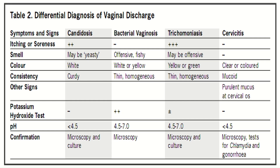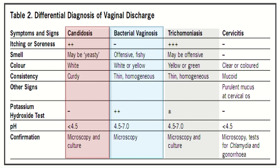This chart shows the differential diagnosis of vaginal discharge. In candidiasis: itching is present, smell may be yeasty, color is white, consistency is curdy, pH may be less than 4.5, and confirmation is by microscopy and culture. In bacterial vaginosis: smell is offensive or fishy, color is white or yellow, consistency is thin or homogeneous, potassium hydroxide test is positive, pH is 4.5 to 7, and confirmation is by microscopy.